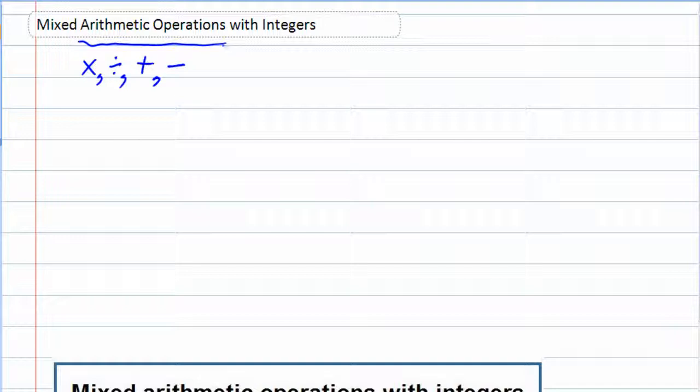And for integers we're referring to the positives and negatives of whole numbers. So zero, plus or minus one, plus or minus two, and so on. So no fractions, no decimals, and only dealing with arithmetic operations.